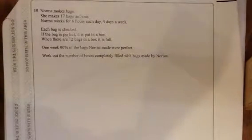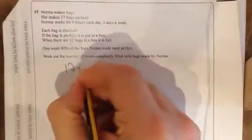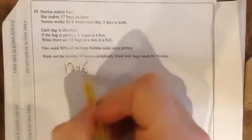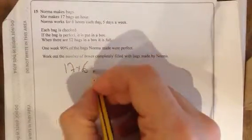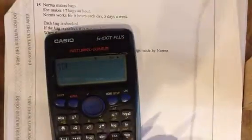So let's work out how many bags she makes in a week first. She makes 17 bags an hour, so we've got to do 17. She works for six hours a day times by six. This is how much she'll do a day and five days a week, so I'm going to times that by five. I'll need to calculate this. 17 times six times five. So she makes 510 a week.